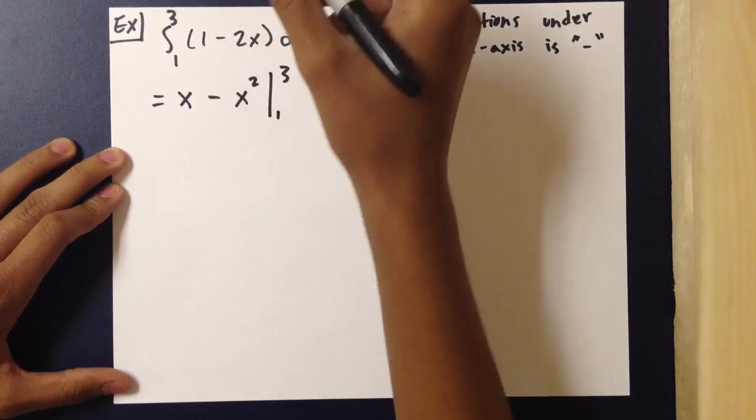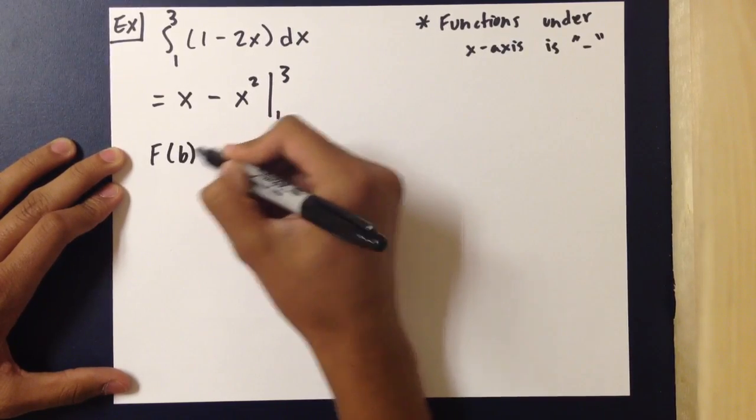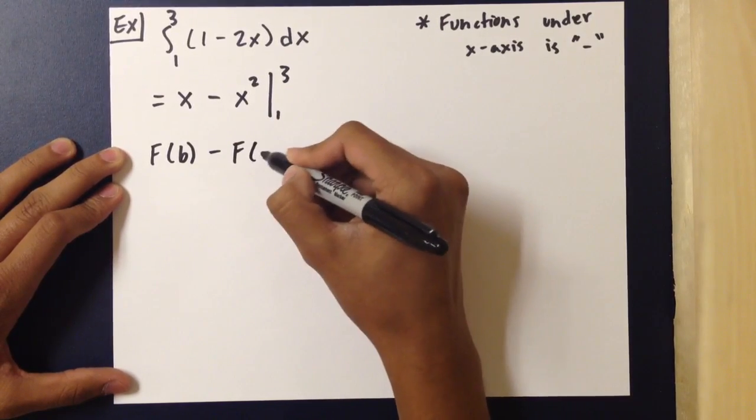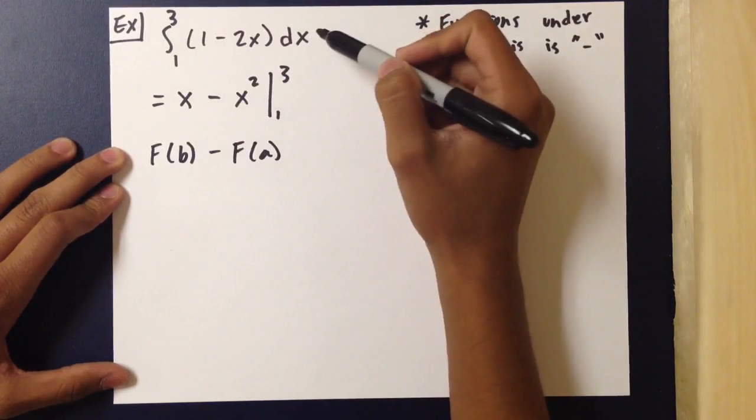Using the second fundamental theorem of calculus, we know that the antiderivative at point B minus the antiderivative at point A gives us the answer to this integral.